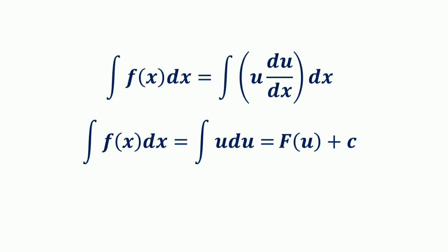Consider a given function f(x) which is the integrand and can be expressed as a constant multiple of another function u and its derivative du/dx. Then integration by substitution is possible, by expressing the integrand f(x) as a function of u and its derivative du/dx, and then integrating with respect to x.